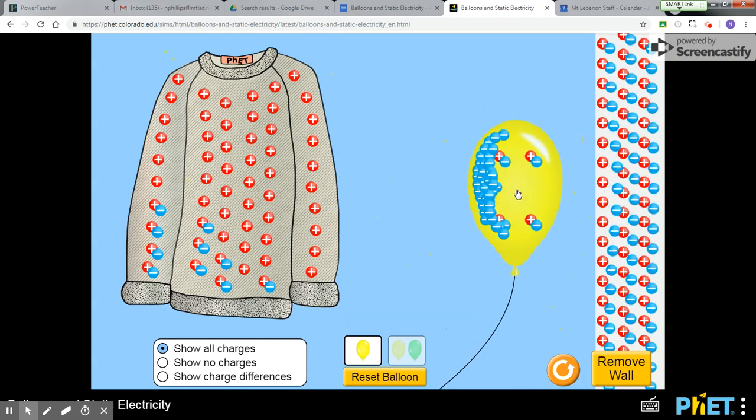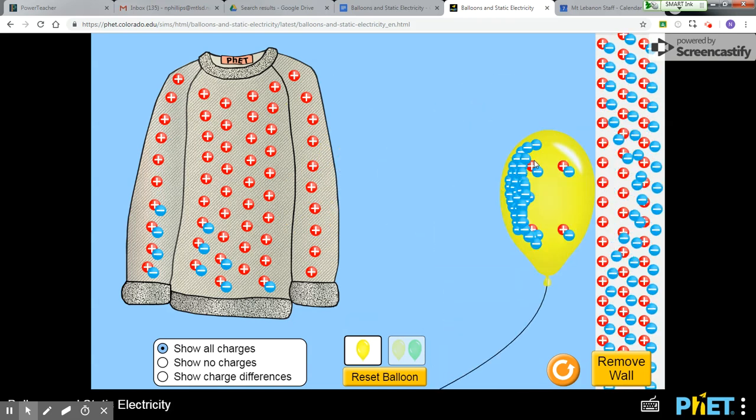Look at that. The negative charges in the negatively charged balloon are repelling the negative charges in the neutral wall. Why aren't the positives going anywhere? That's right.